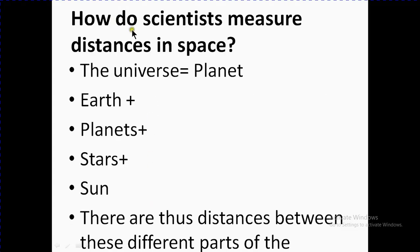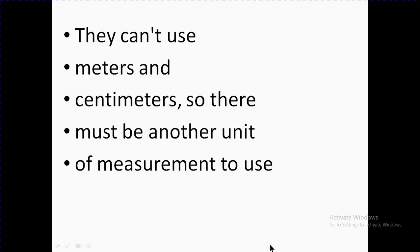Let's start the lesson. The question is, how do scientists measure distance in space? In the universe, we have planet Earth, planets, stars, and the sun. There are vast distances between these different parts. They can't use meters and centimeters, so there must be another unit of measurement to measure space.